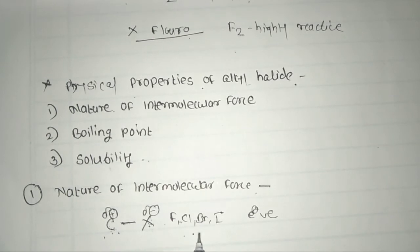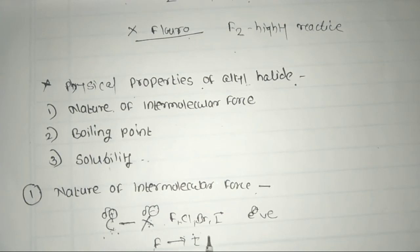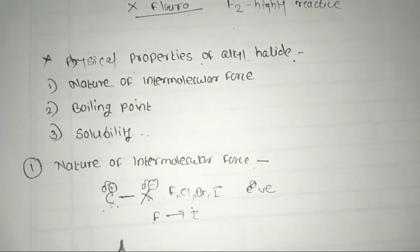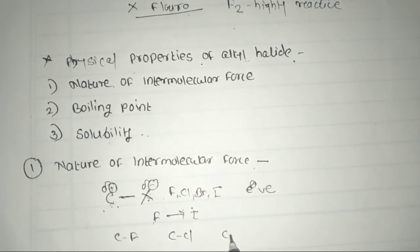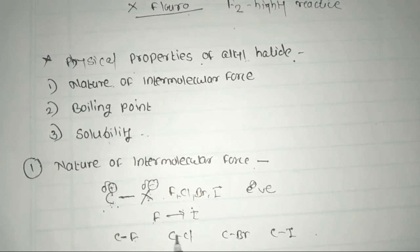As the size of the halogen increases from fluorine to iodine, the bond length between carbon and halogen also increases. That is, the bond length increases in the order: C–F, C–Cl, C–Br, and C–I, as the size of the halogen atom increases.